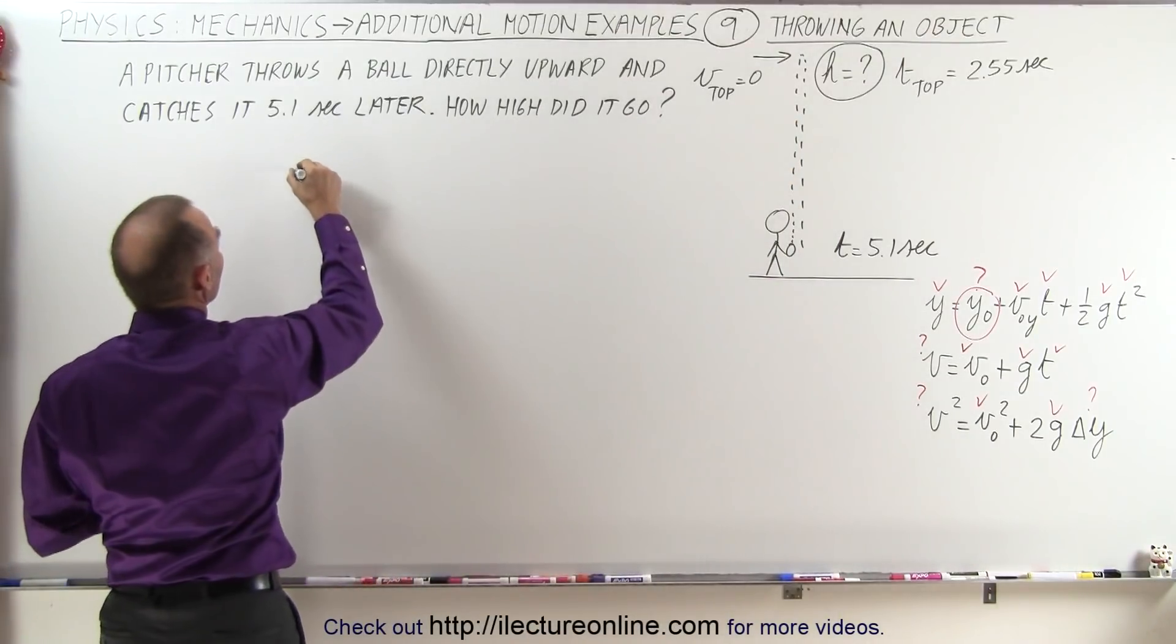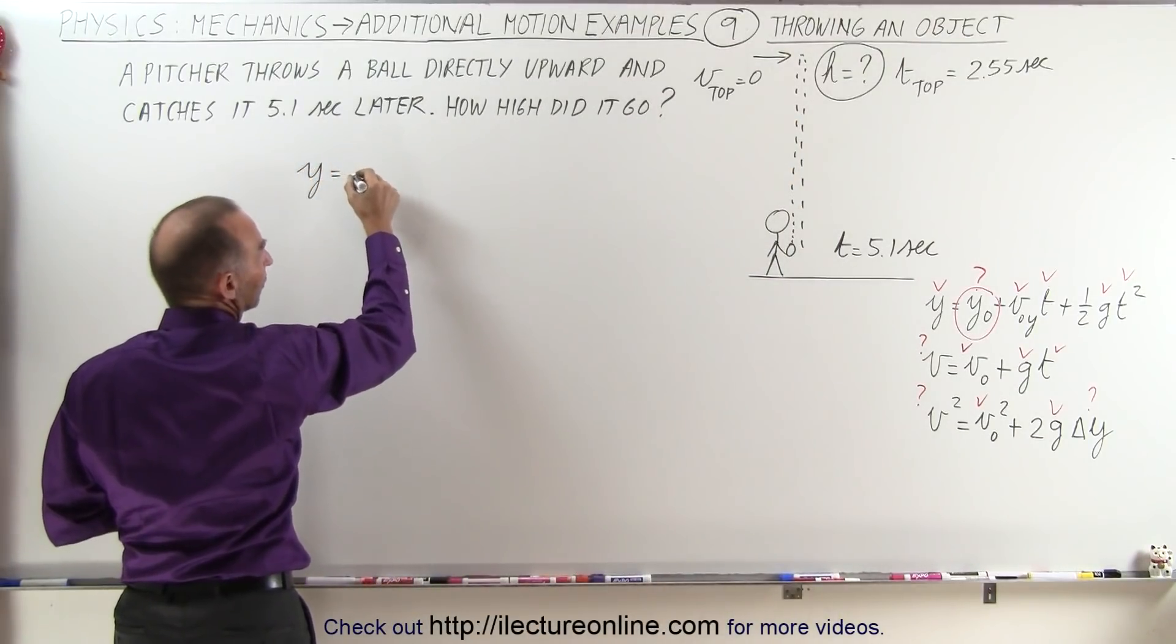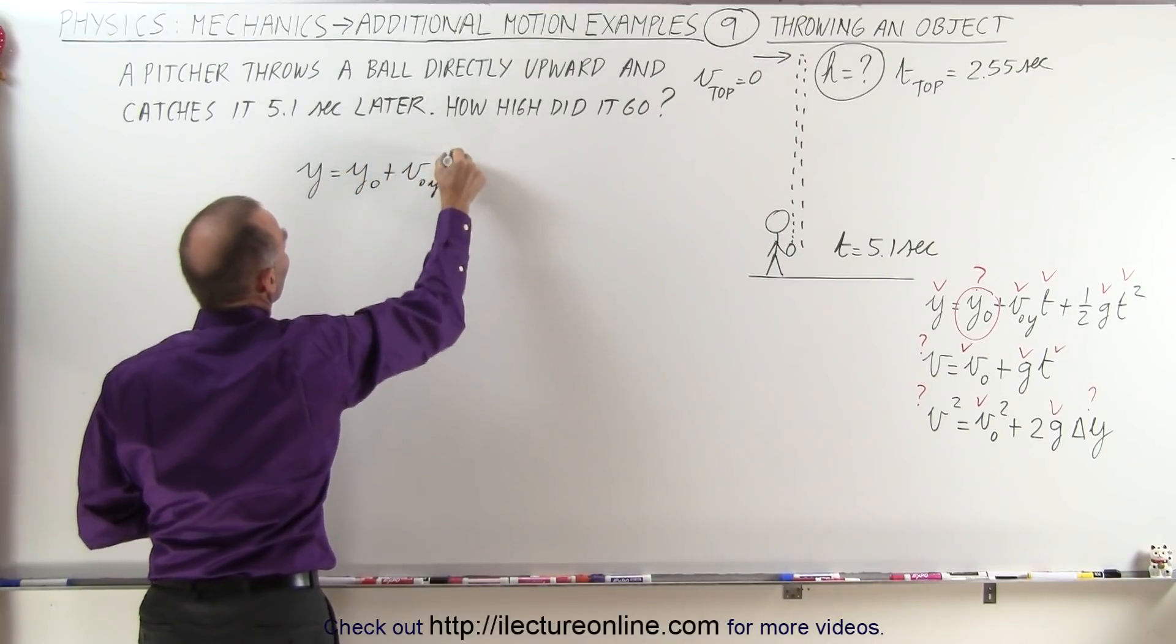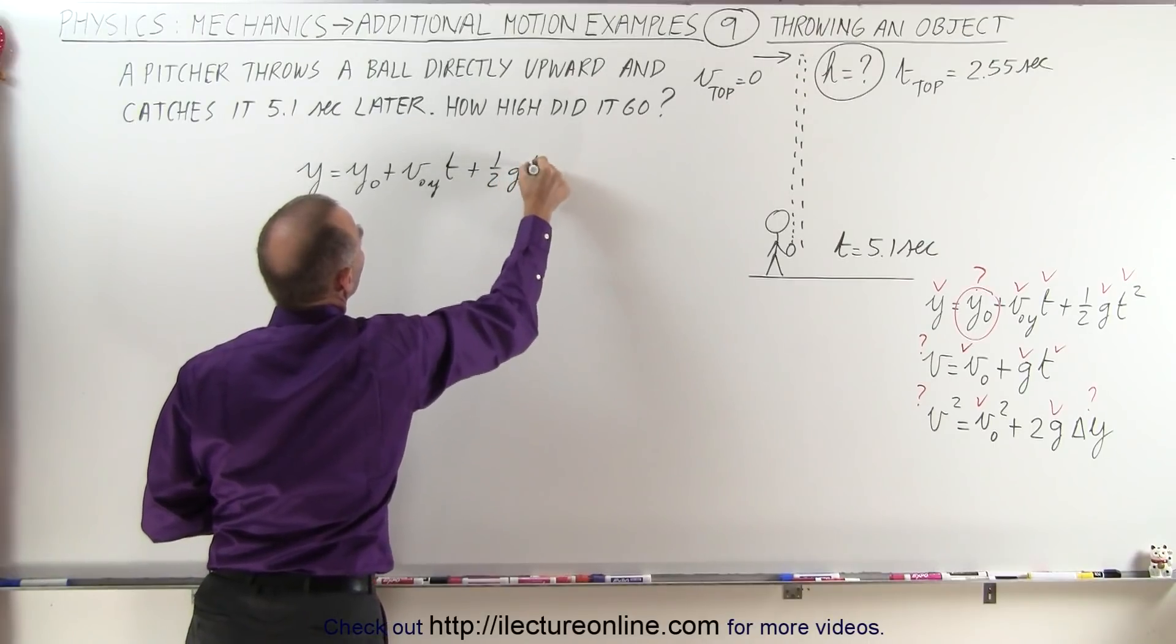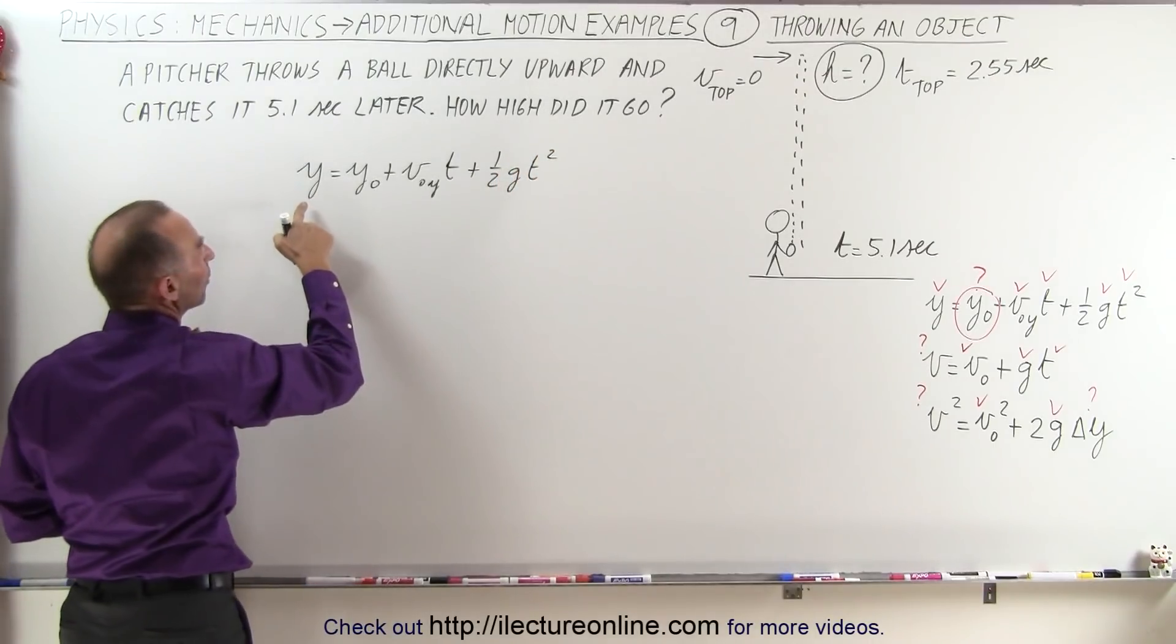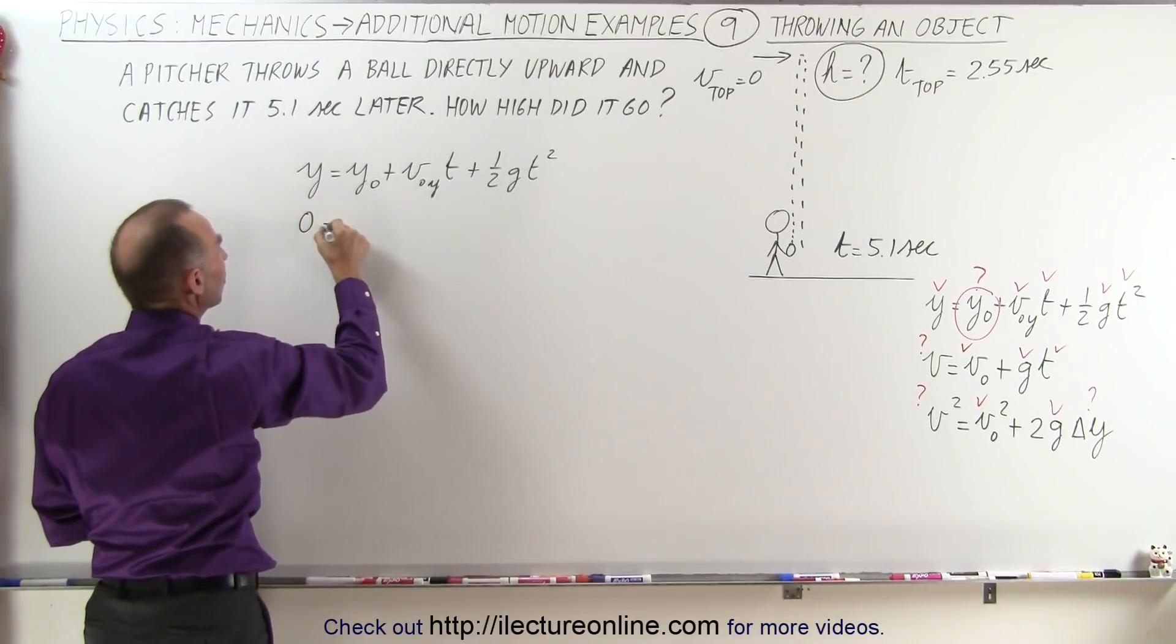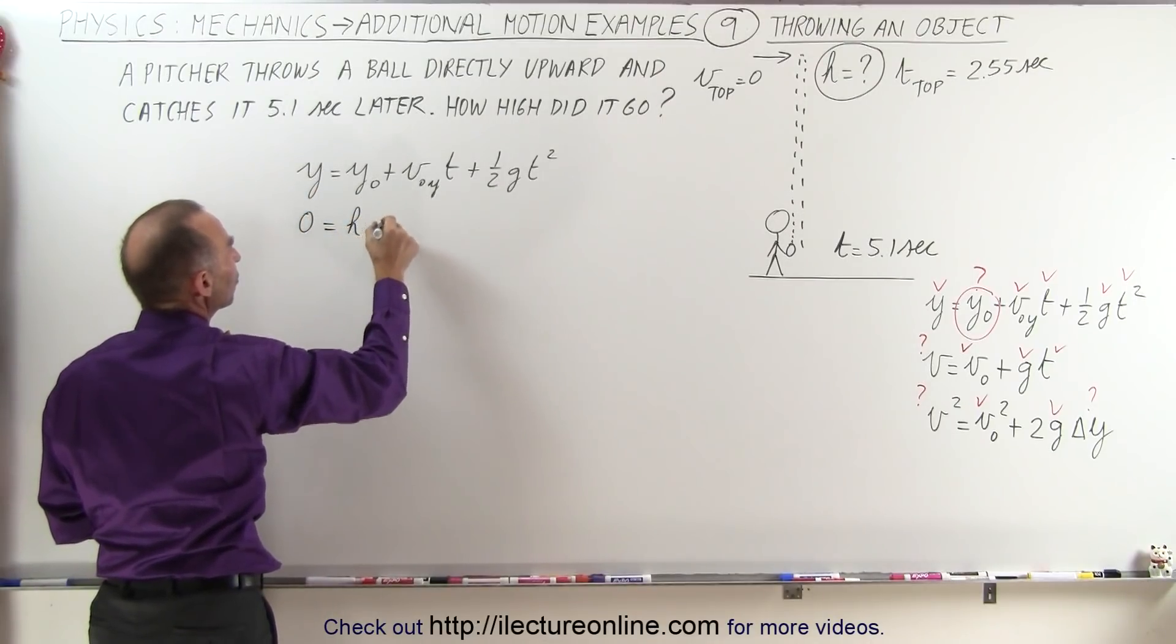So we can write that y is equal to y sub naught plus v sub naught in the y direction times time plus one-half g t squared. Plug in the numbers, the final height will be zero when it reaches back down, the initial height is what we're looking for, that's h.